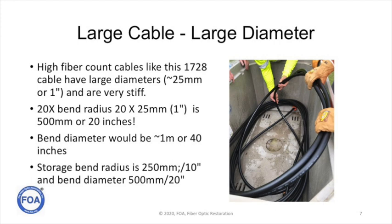High fiber count cables, which are becoming more common in the market now, like the 1728 fiber cable, have large physical diameters — this one's about 25 millimeters or 1 inch — and they are very stiff. 20 times the bend radius means it has a bend radius of 20 inches. Bend diameter for a capstan, for example, would be on the order of a meter or 40 inches. Even for storage, like in this manhole, the bend radius is 10 inches and the bend diameter 20 inches. So a cable this big requires a very large manhole.